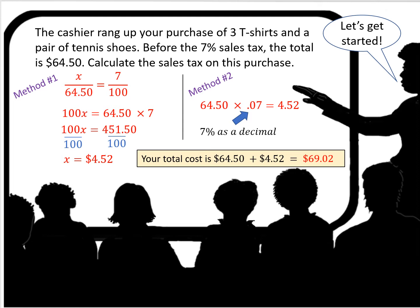In the first method, you see it set up as a ratio. What is the sales tax on $64.50 if the sales tax is 7%? 7% is 7 over 100. So 100x cross multiply equals 64.50 times 7. Then you divide both sides by 100 and you come up with the sales tax of $4.52.